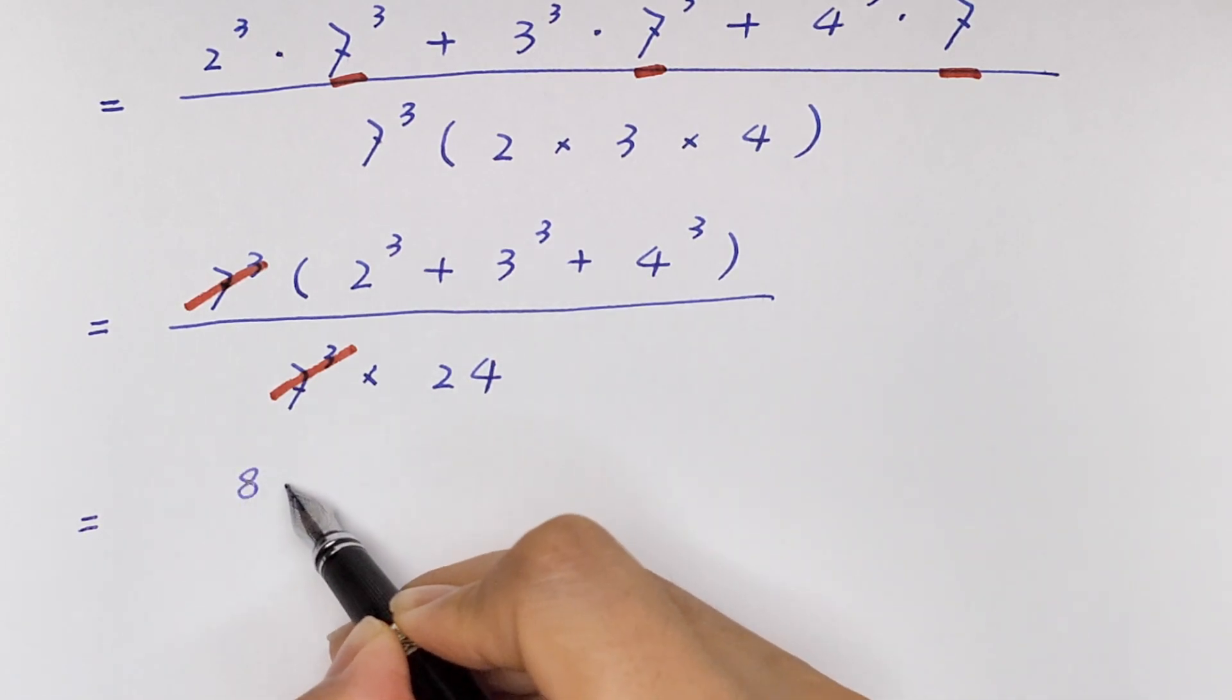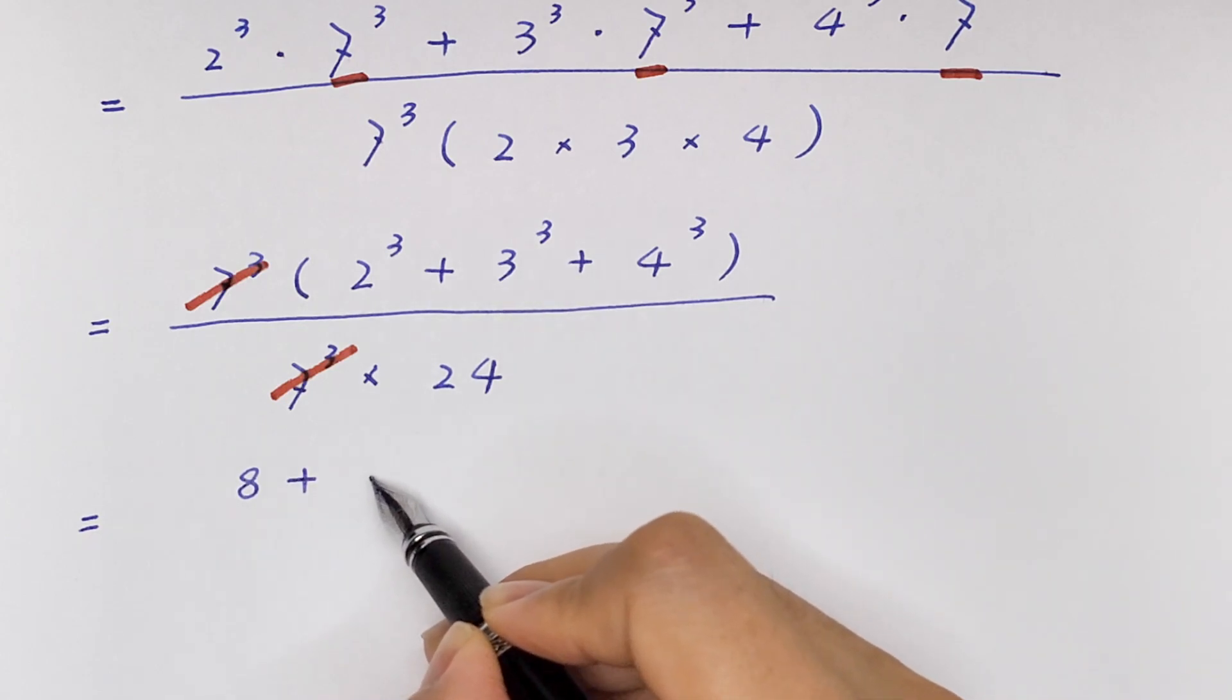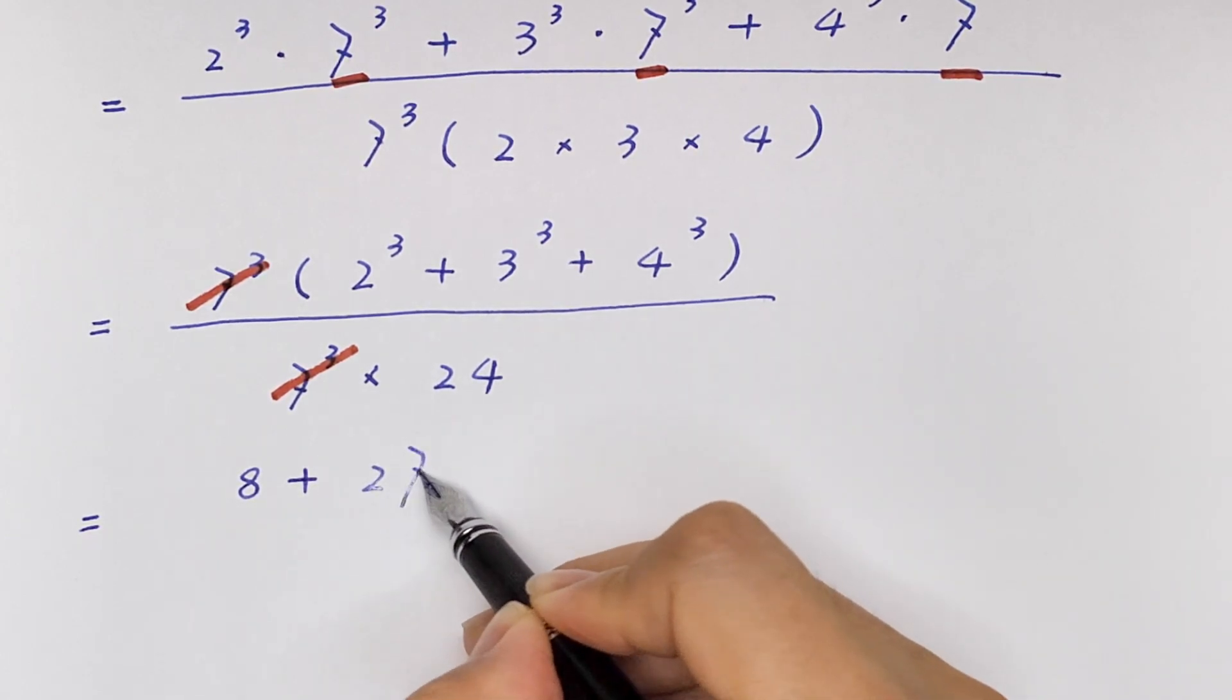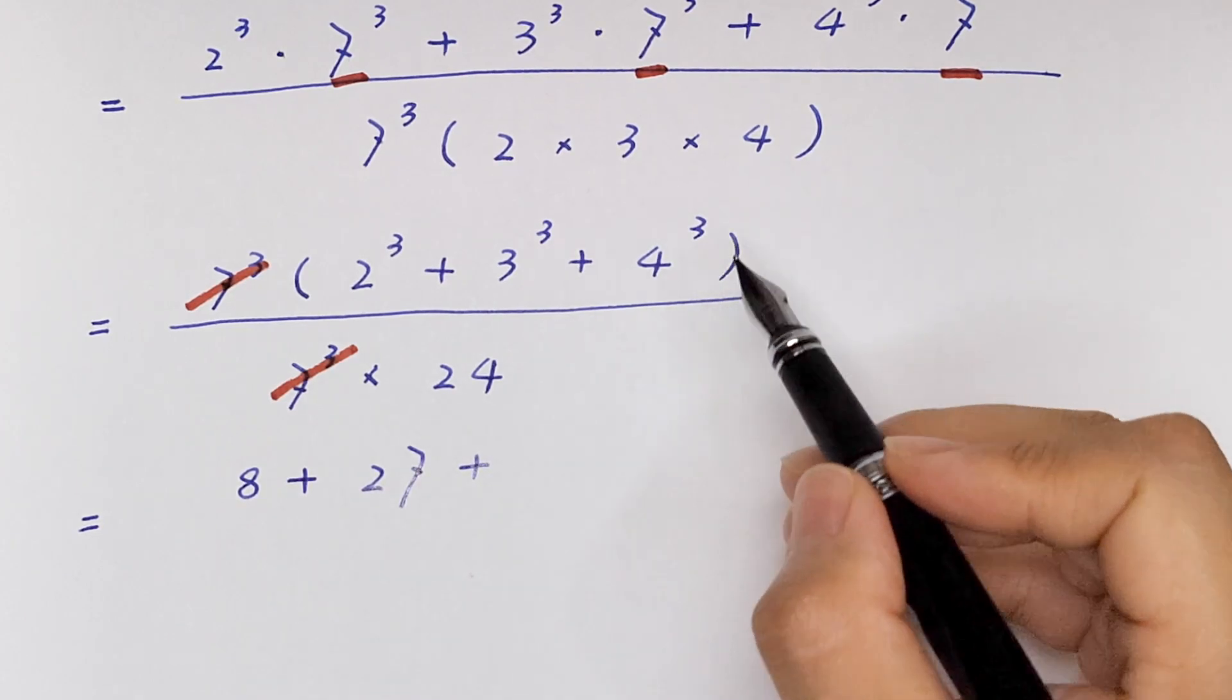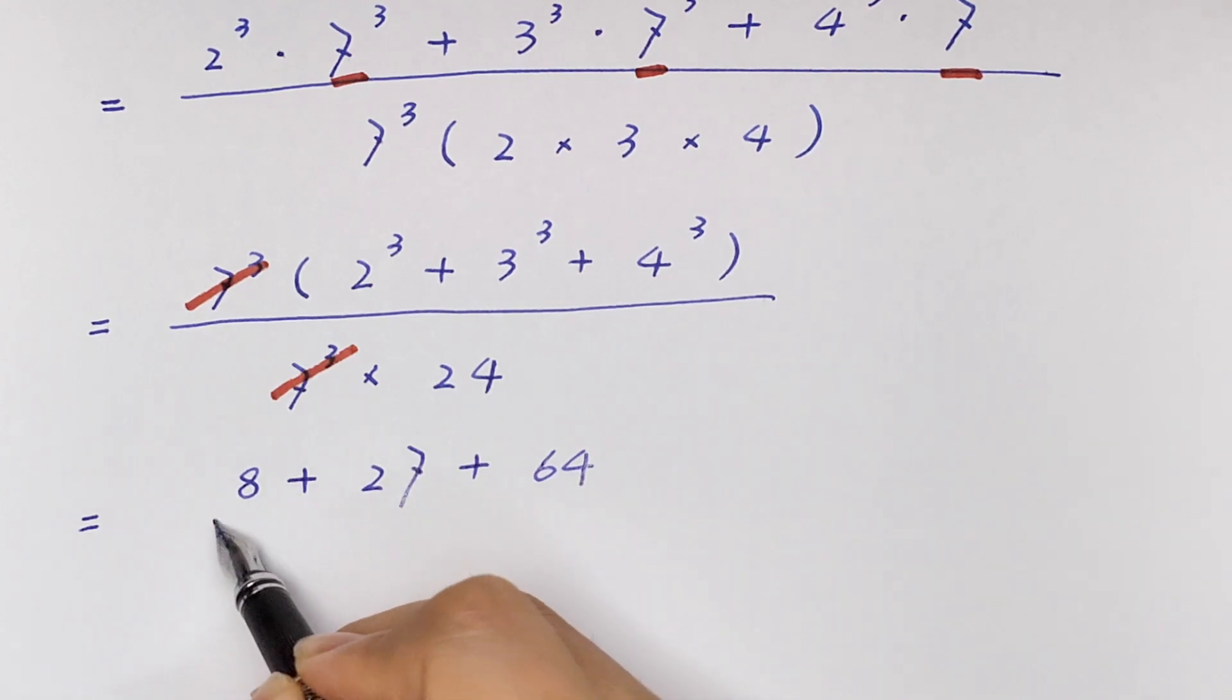So it will be equal to 2³ equals 8, plus 3³ equals 27, plus 4³ equals 64, over 24.